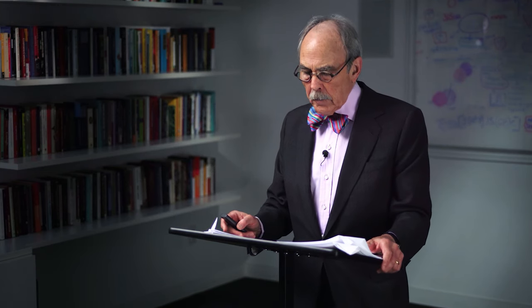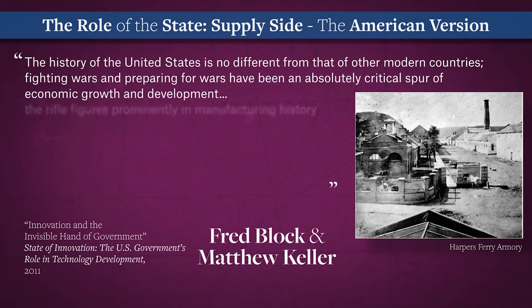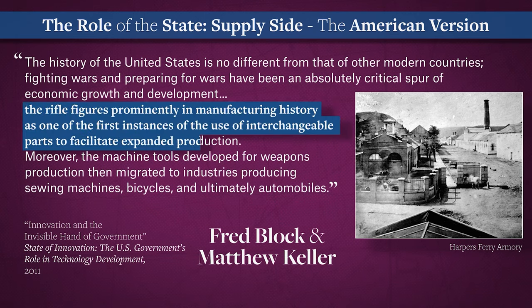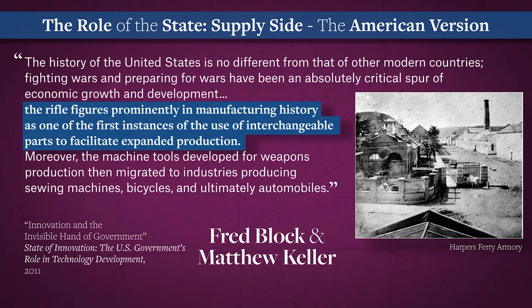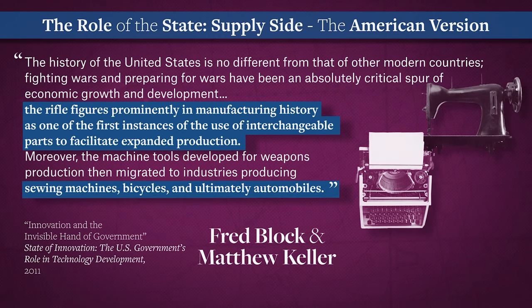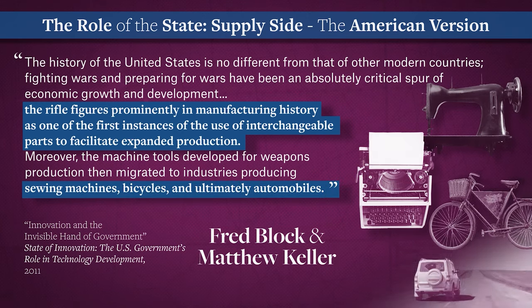On the supply side, it was the American army that reduced to practice the technological achievement that enabled mass production. The U.S. Army's armories at Springfield, Massachusetts and Harper's Ferry, West Virginia perfected production with interchangeable parts. It started with guns, but went on to sewing machines, typewriters, bicycles, and automobiles.